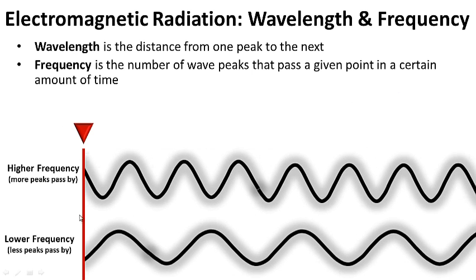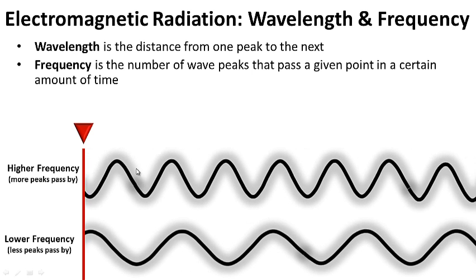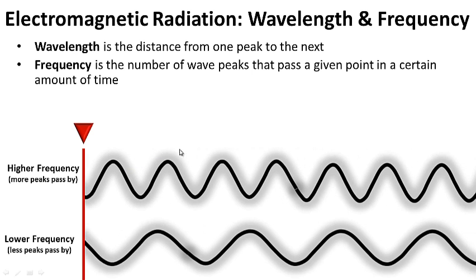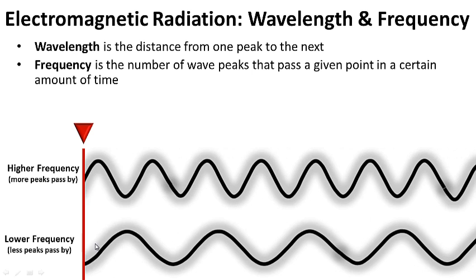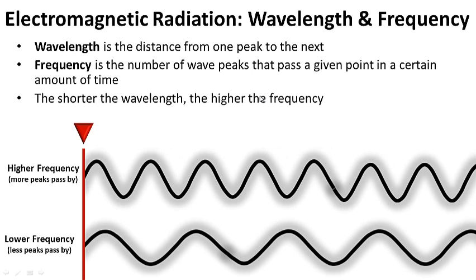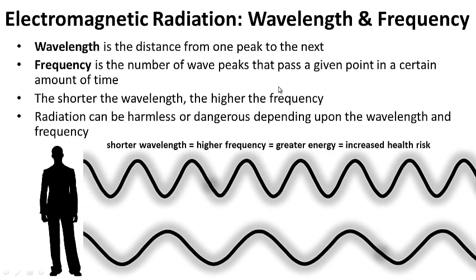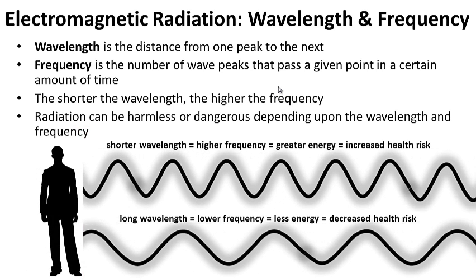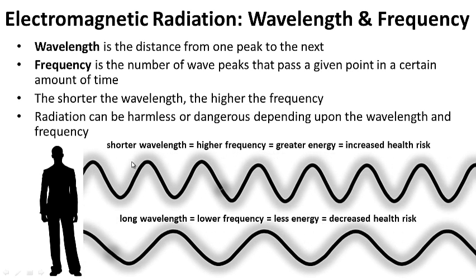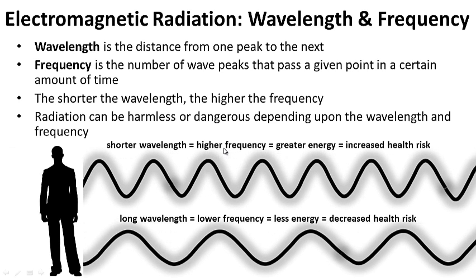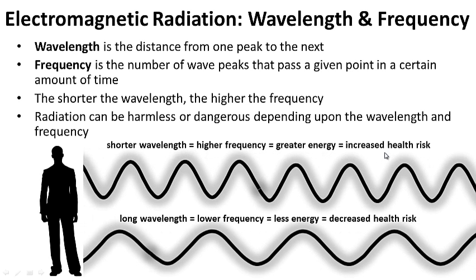Notice more peaks are passing by for our short wavelength radiation here, but for longer wavelength radiation, fewer peaks are passing by our point. So the shorter the wavelength, the higher the frequency. Radiation can be harmless or dangerous depending upon the wavelength and frequency. More peaks means a shorter wavelength, and higher frequency equals greater energy — therefore it is more dangerous, increased health risk.